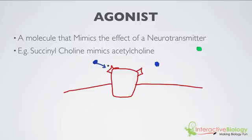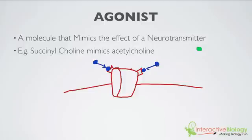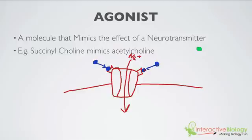When that comes here and it binds to the receptor, the same thing happens on the other side and it binds to the receptor. The channel opens, which is what it would normally do if acetylcholine binds, and then sodium ions on the outside end up coming inside the cell. So this would be an example of an agonist. It's not acetylcholine — it's succinylcholine — and that comes, binds to the receptor, and causes a similar response. That is an agonist.